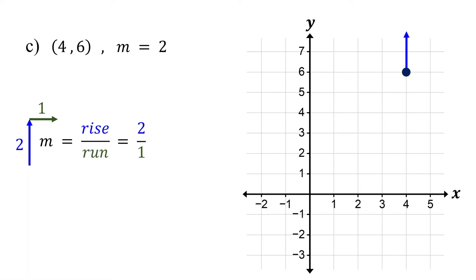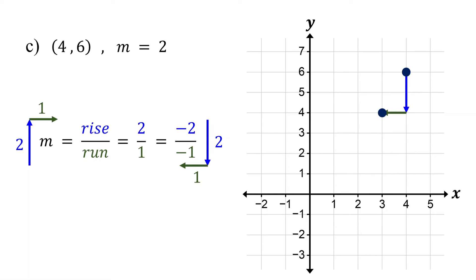Can we go backward? Let's find out. If we change the signs of both 2 and 1, the slope stays the same, because negative 2 divided by negative 1 is still 2. So, with our modified slope, the rise is 2 units down, and the run is 1 unit to the left. Now, starting from the point, move down 2 units. Then, to the left 1 unit and plot the second point. We're now inside the coordinate plane.